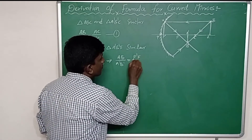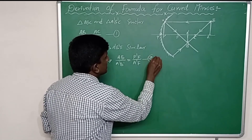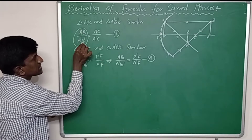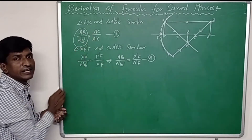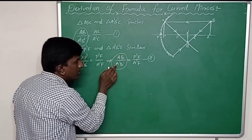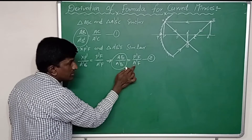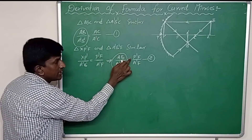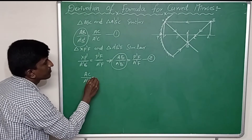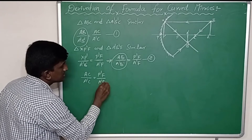This is the second equation. From the first equation, AB / A'B' = AC / A'C, and from the second equation, AB / A'B' = P'F / A'F. From these two we can write the third equation: AC / A'C = P'F / A'F.